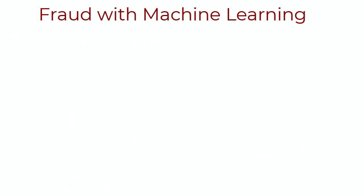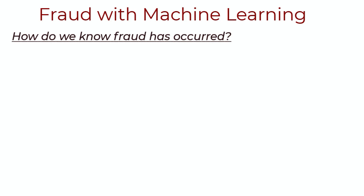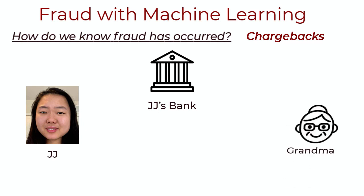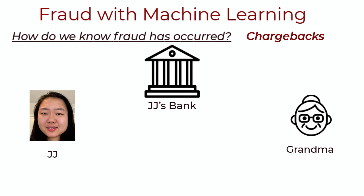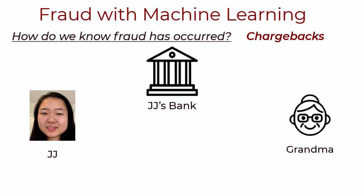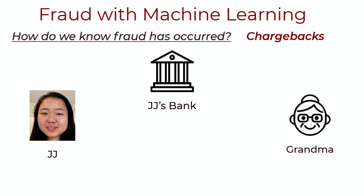Let's first ask some basic questions. How do we know that fraud has occurred? It's through chargebacks. This is JJ. She tells her bank she doesn't recognize a $500 transaction paid to Grandma Fixes. The bank informs Grandma that the transaction may have been fraudulent and will be taking the $500 back. Grandma doesn't dispute it, and JJ's money is returned. People can file for chargebacks if they don't recognize a transaction, which allows banks to forcefully reverse a transaction.